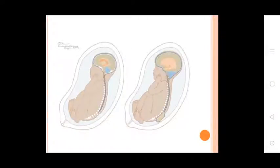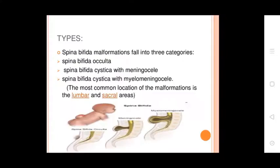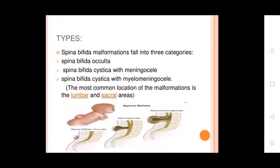Types: Spina Bifida malformations fall into three categories — Spina Bifida Occulta, Spina Bifida Cystica with Meningocele, and Spina Bifida Cystica with Myelomeningocele.